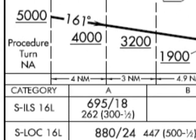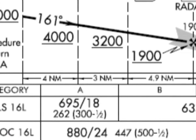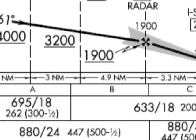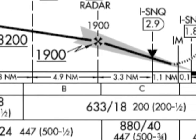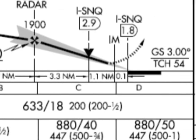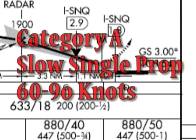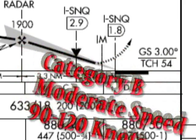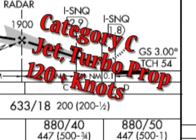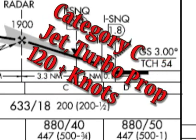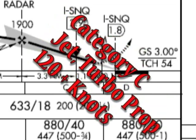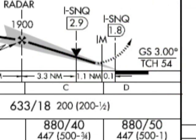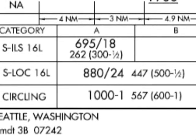Approach minima category: an approach plate will list different categories for approaches — A, B, C, D, E, and copter — based on the airspeed of your aircraft. Category A is typically slow single-prop aircraft at 60 to 90 knots. Category B is moderate aircraft at about 90 to 120 knots. Categories C and D, such as a heavy 737 or 747, are fast jet or multi-turboprop aircraft flying above 120 knots. The values shown below each category represent the altitudes and visibilities required for using the approach to land on that particular runway.